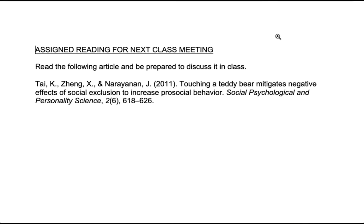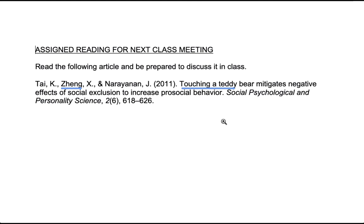Our third example is the assigned reading for the next class meeting. Here we're seeing the authors, the title of the article — 'Touching a Teddy Bear Mitigates Negative Effects of Social Exclusion to Increase Pro-Social Behavior' — that's a long one. And this is the journal: Social Psychology and Personality Science, the volume, the issue, and the pages. Since we have such a long title, and because maybe the first part of the title is not that distinctive in its words, we're going to do a combination search of part of the title and one of the author's last names — just another strategy that you can use.